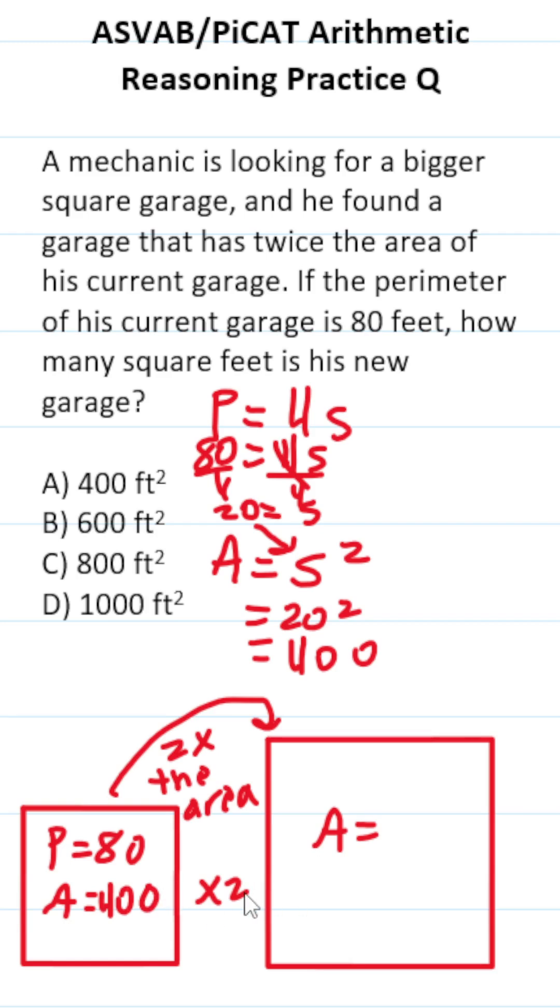If the new garage has twice that area, we do 400 times 2, it's going to be 800 square feet, which is answer choice C in this case.